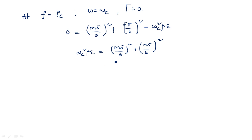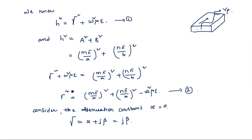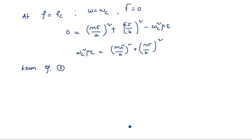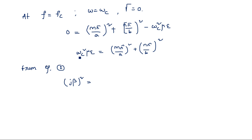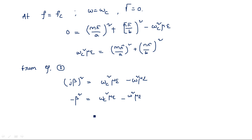Now substitute this back into equation 2. Since γ = jβ, we have (jβ)² = (mπ/a)² + (nπ/b)² − ω²με. Substituting (mπ/a)² + (nπ/b)² = ωc²με, we get (jβ)² = ωc²με − ω²με. Since j² = −1, this gives −β² = ωc²με − ω²με, so β² = ω²με − ωc²με.